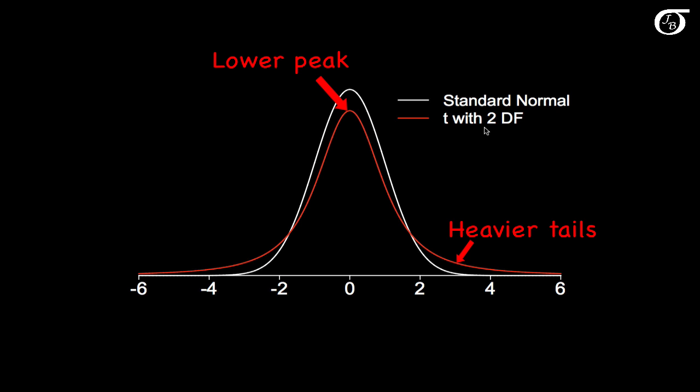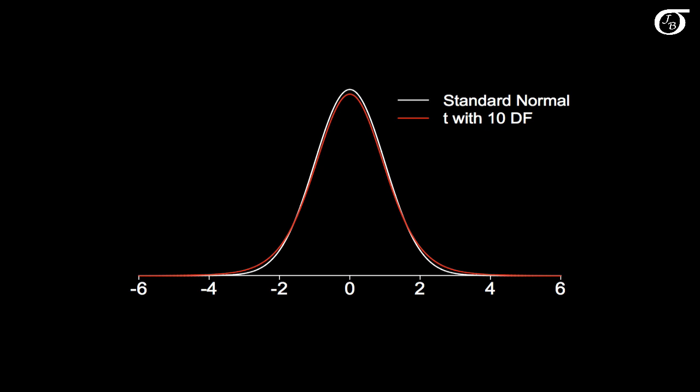Here I have a t-distribution with 2 degrees of freedom, but as those degrees of freedom increase, the t-distribution tends toward the standard normal distribution. So let's see what happens when we increase those degrees of freedom. Here's a t-distribution with 10 degrees of freedom, with 15, with 20 — and that t-distribution is getting closer and closer to the standard normal.